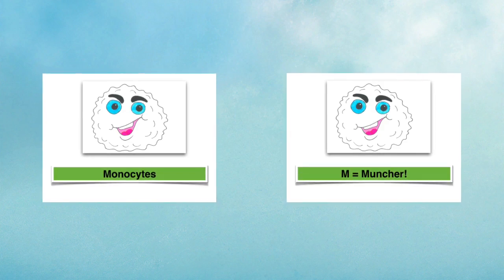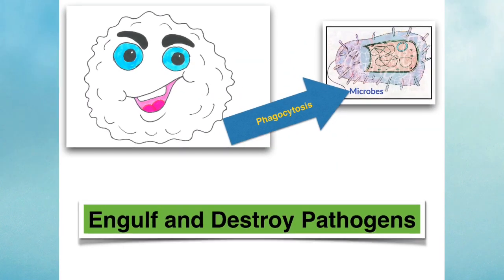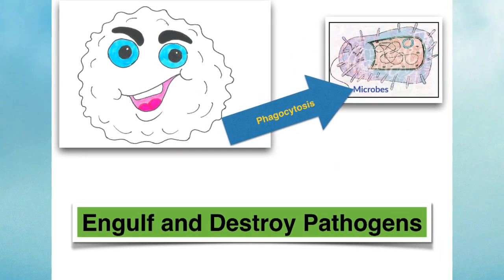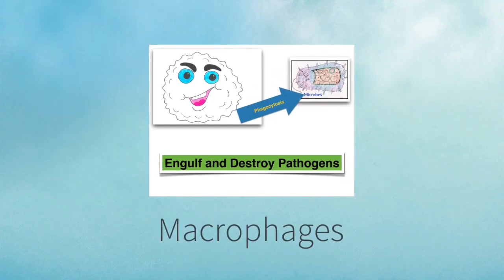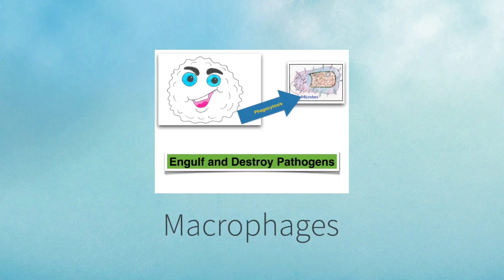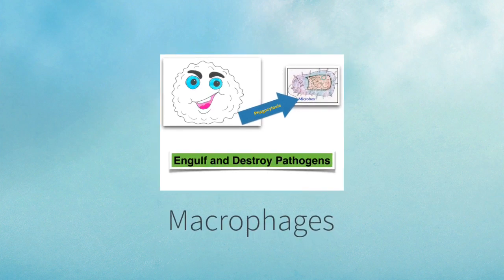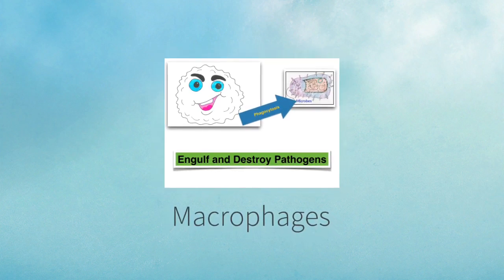Monocytes, think of M for munchers to help you remember. They engulf and destroy pathogens or disease-causing organisms in a process known as phagocytosis. Macrophages are a type of monocyte that you will encounter very often on your leaving cert course. Just think of macrophages as being big munchers.